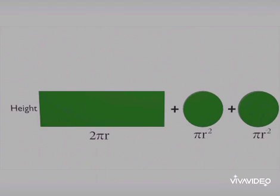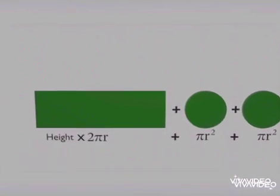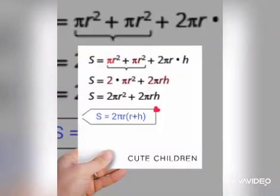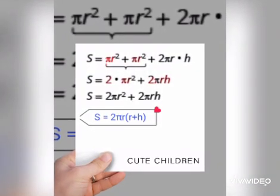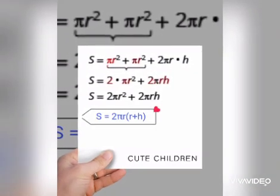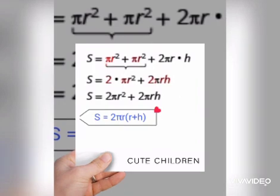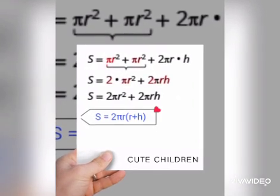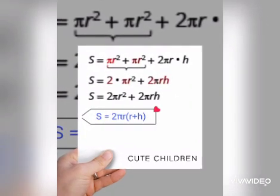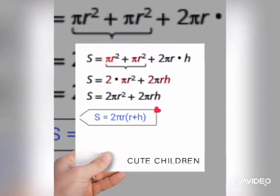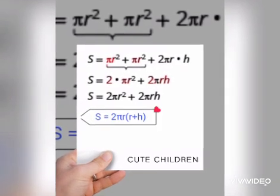The area of each circle is πr², and the area of the rectangle is length multiplied by breadth, which comes out to be height multiplied by 2πr. As we add the area of these three shapes and take 2πr common, we get the total surface area of a cylinder, that is 2πr(r + h).